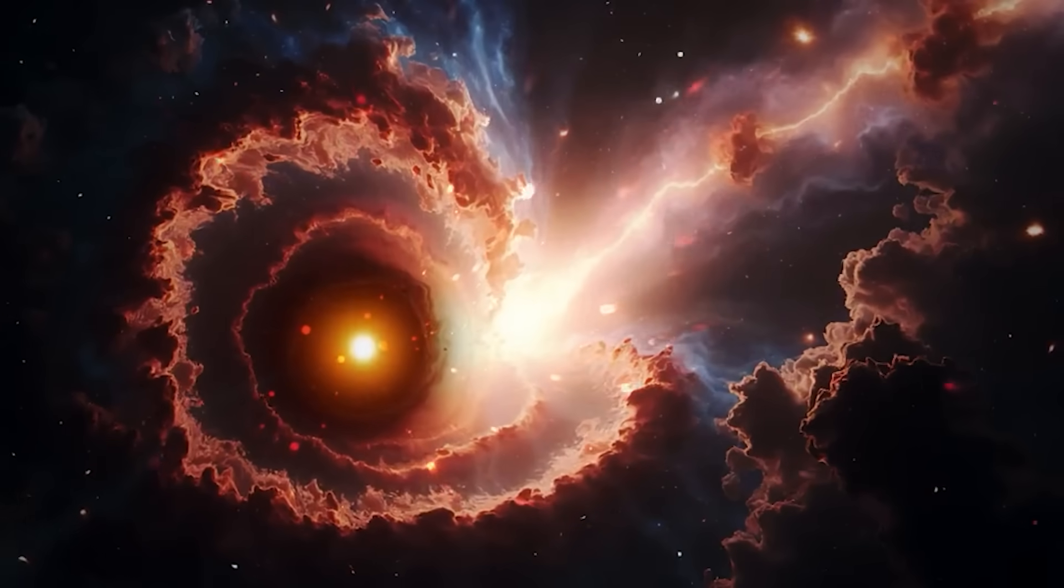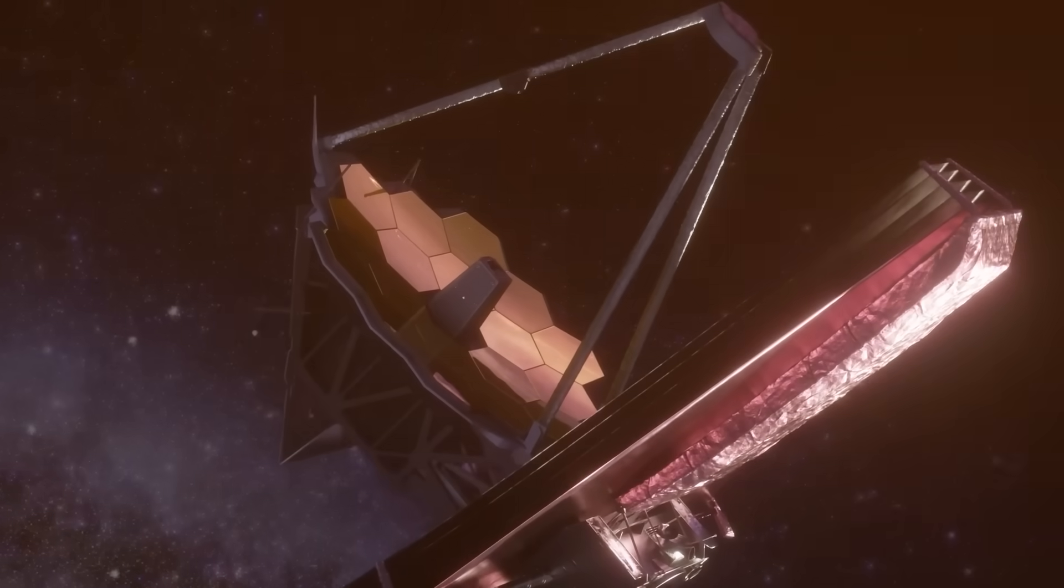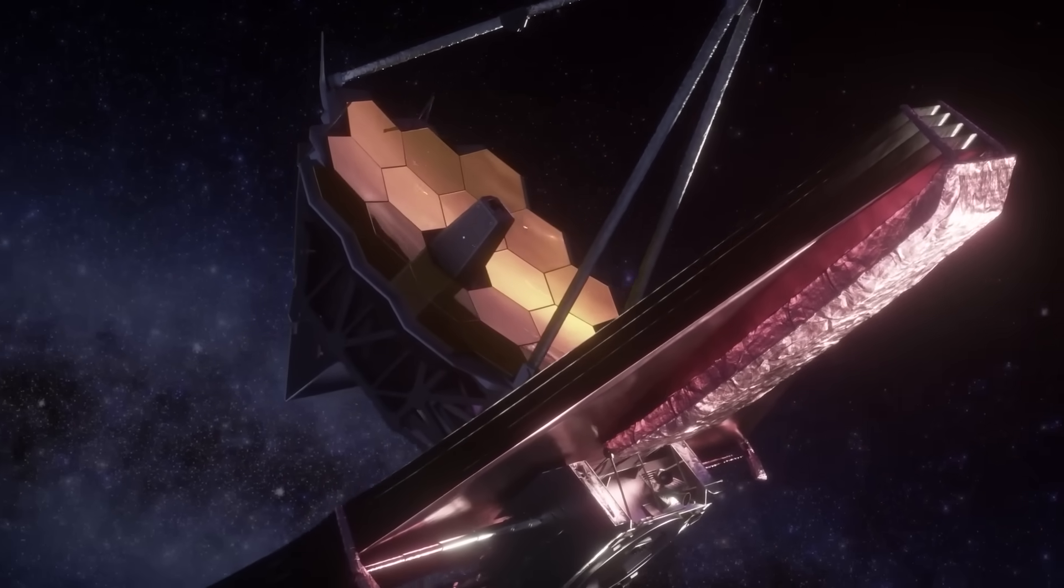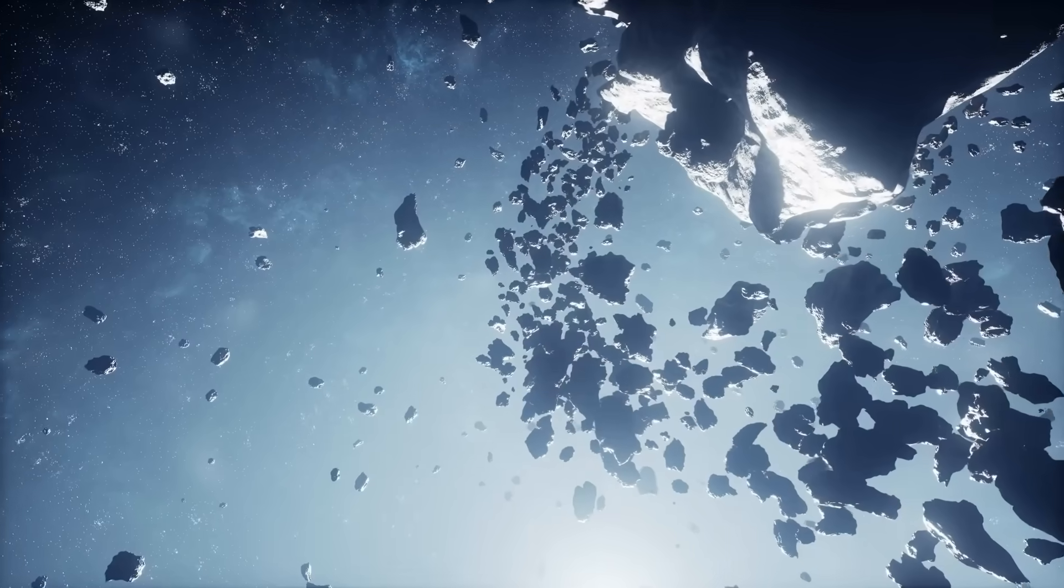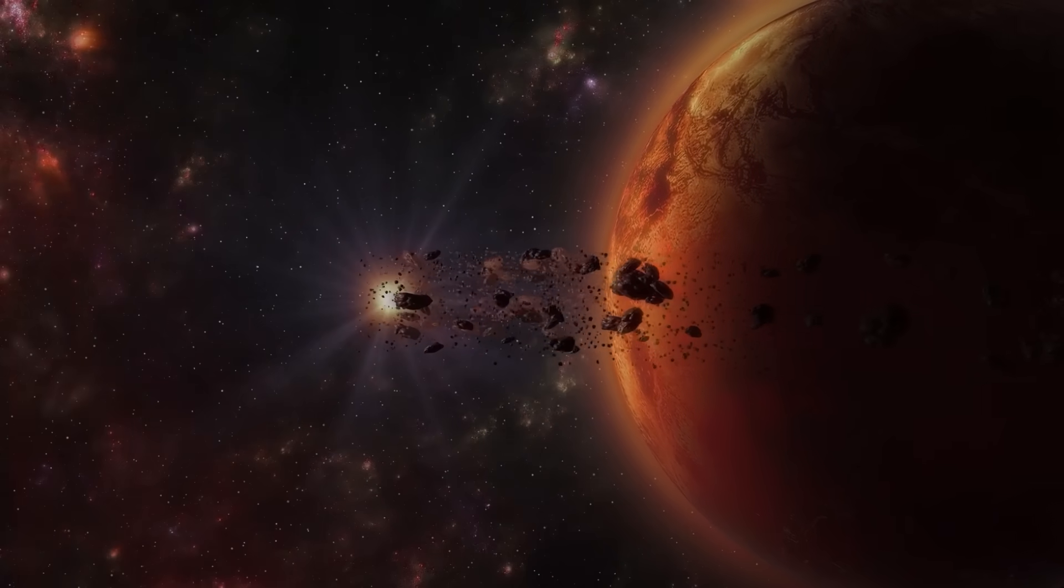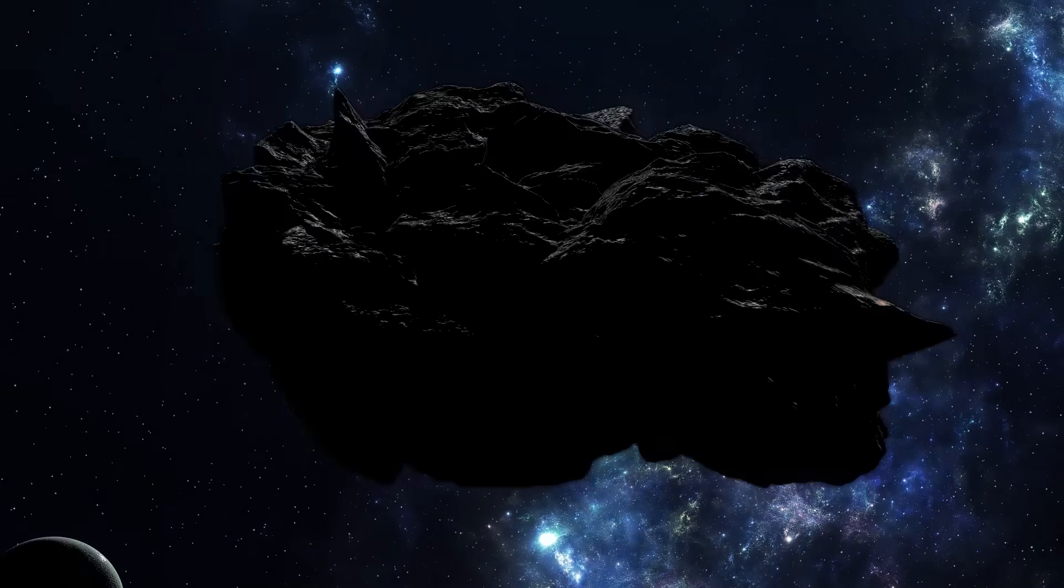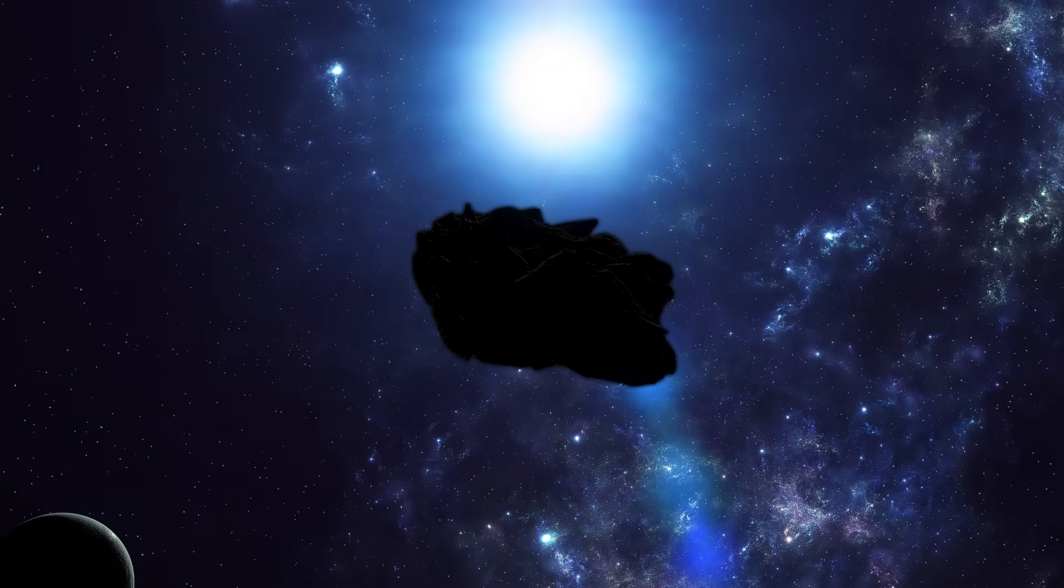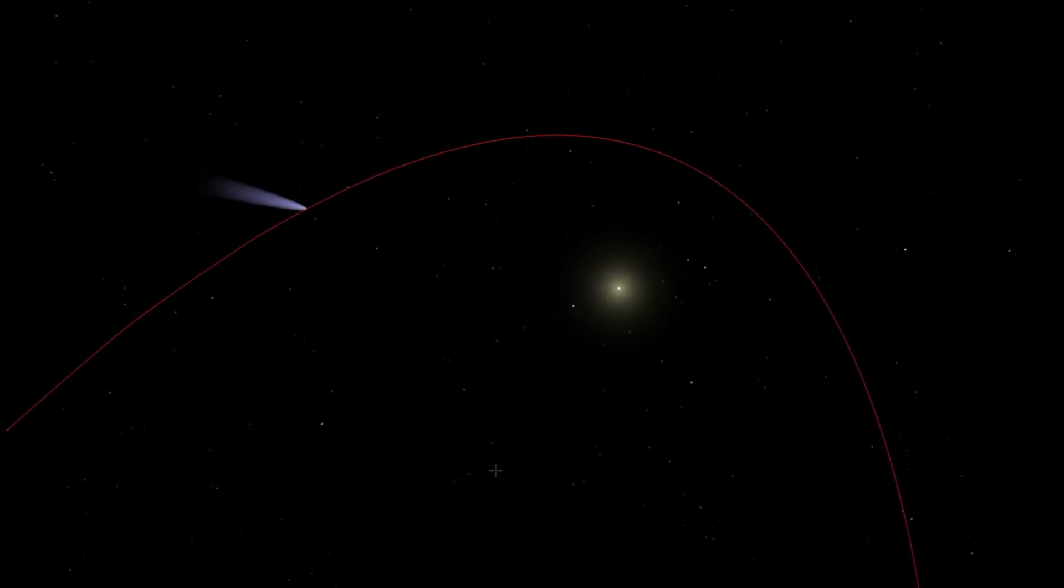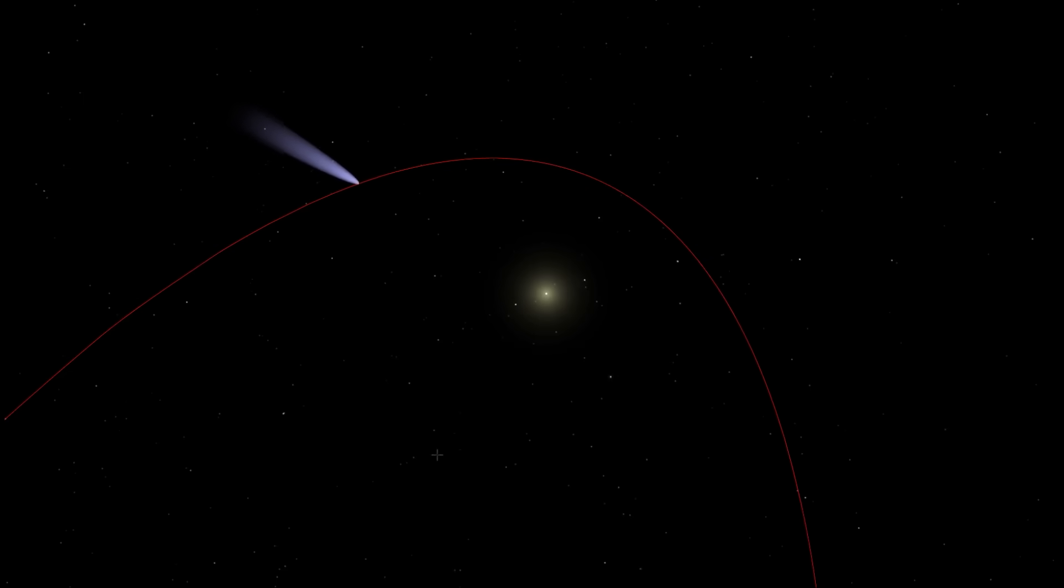Then came the discovery that changed everything. Using differential imaging from the James Webb Space Telescope, researchers noticed a secondary object, smaller, colder, and perfectly aligned with 3I Atlas's trajectory. At first, they thought it was a fragment or a dust cloud. But over successive scans, the secondary body maintained a fixed distance of 120 kilometers and moved in precise synchronization with the primary object.